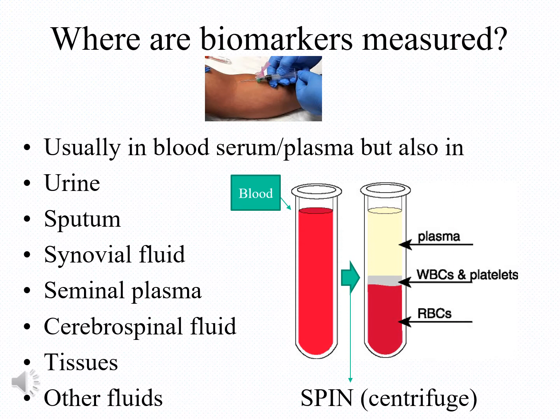The most usual fluid for measuring biomarkers is blood, and especially the derivatives of blood — plasma or serum — but biomarkers can also be measured in urine, sputum, synovial fluid, seminal plasma, cerebrospinal fluid, tissues, and other fluids.